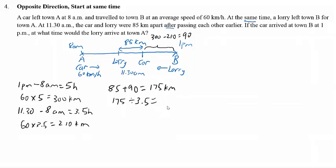When you calculate, you will get a total of 50. This is the speed of the lorry — 50 km per hour.